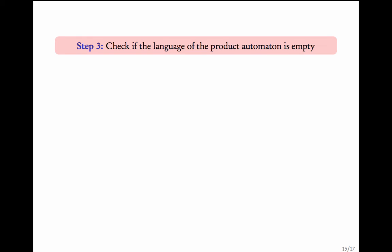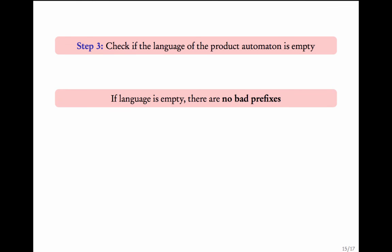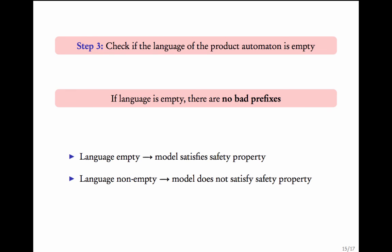This is what we check in Step 3: check if the language of the product automaton is empty. If the language is empty, it means there are no bad prefixes, and the model satisfies the safety property. If the language is non-empty, the model does not satisfy the safety property because there exists a bad prefix.